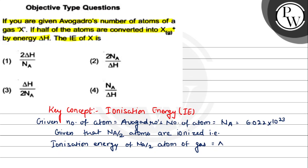So the ionization energy of one atom of gas is delta H divided by Na upon 2.